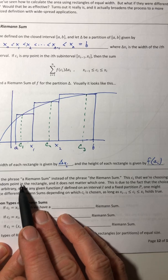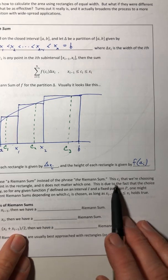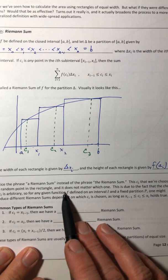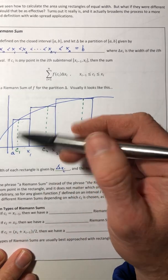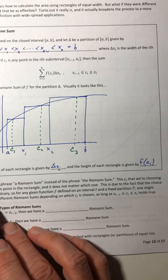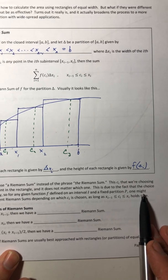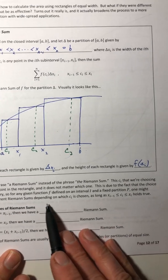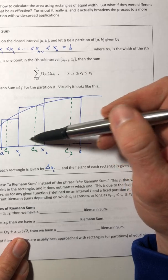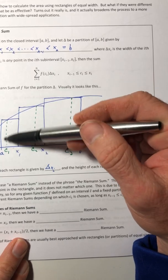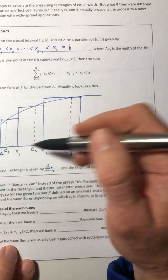Okay, so notice the phrase 'a Riemann sum' instead of the phrase 'the Riemann sum'. So this C that we're choosing is a random point in the rectangle and it doesn't matter which one. It can be anywhere in there as long as it's generating the height of the rectangle. This is due to the fact that the choice of C is arbitrary. So for any given function f defined on that interval and a fixed partition, one might produce different Riemann sums depending on which C you choose. So like if I adjusted the width of each of these rectangles, the C could be in a different spot. And then the total area of these rectangles would be different. They'd be close, but they'd be different.